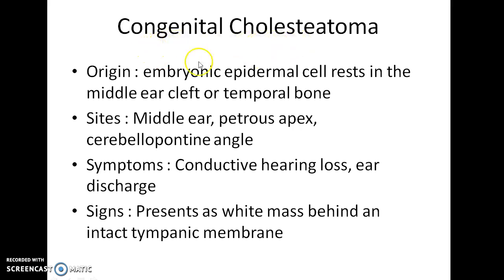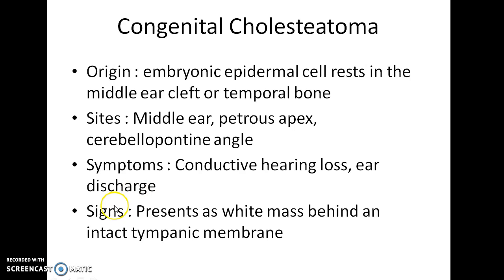Congenital cholesteatoma arises from embryonic epidermal cell rests in the middle ear cleft or temporal bone. The various sites include the middle ear, petrous apex, and cerebellopontine angle. Symptoms include conductive hearing loss and ear discharge. It presents as a white mass behind an intact tympanic membrane.